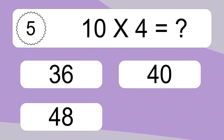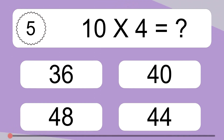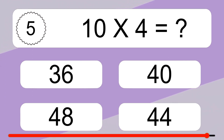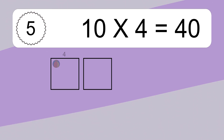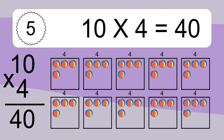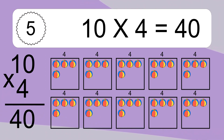10 times 4 equals what? 10 times 4 equals 40. We have 10 boxes, and each box has 4 colorful balls inside. If you count all the balls in all the boxes together, you will have 10 times 4 balls. This equals 40 balls.